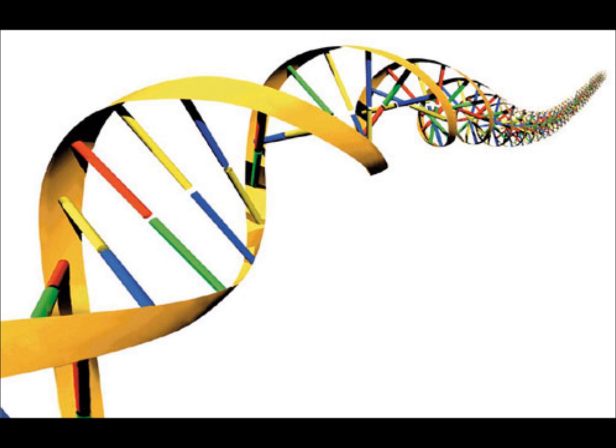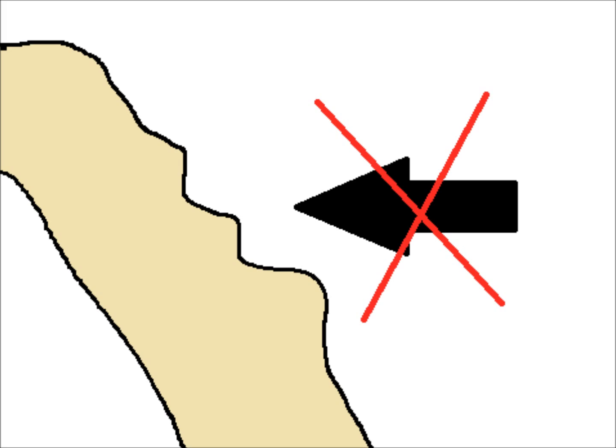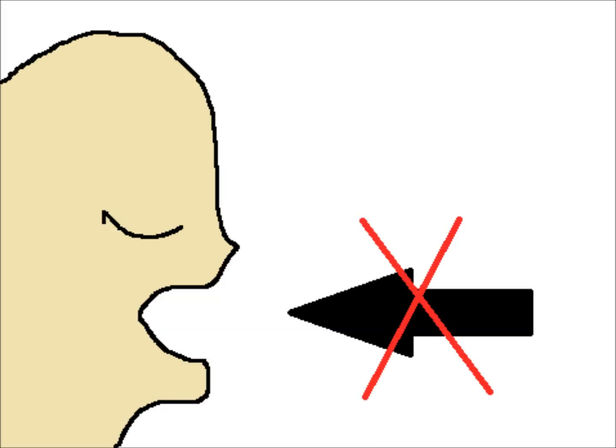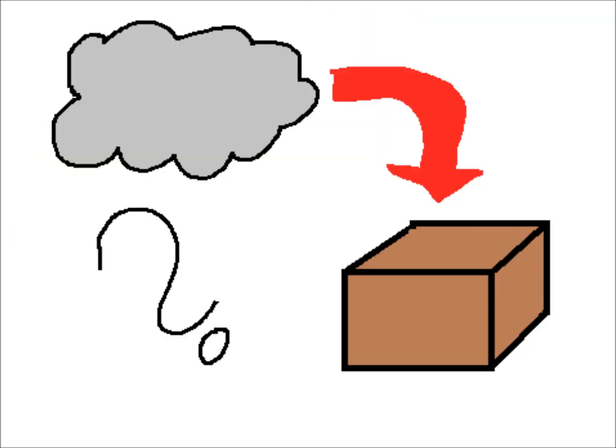Nitrogen is part of DNA, your genetic code. All living things need nitrogen to survive. Nitrogen gas makes up about 80% of the gases in our atmosphere, but to get our nitrogen, we can't absorb it through the skin or inhale it. Instead, we get nitrogen as a solid in the food we eat. So how does a gas become a solid?